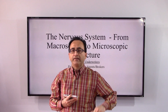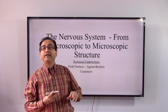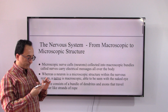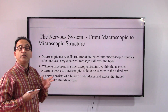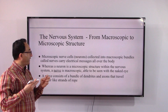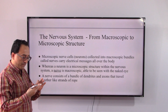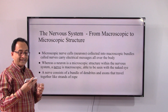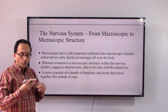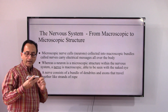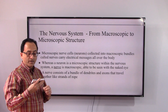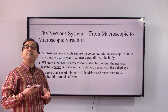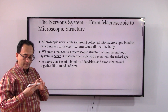Hello friends and welcome back. We'll continue with our nervous system, moving from macroscopic to microscopic structure. We have been talking about neurons, the microscopic nerve cells. When they are collected into macroscopic bundles, they are called nerves, which carry electrical messages all over the body. A neuron is a microstructure within the nervous system, while a nerve is a macroscopic structure that we can see with the naked eye.